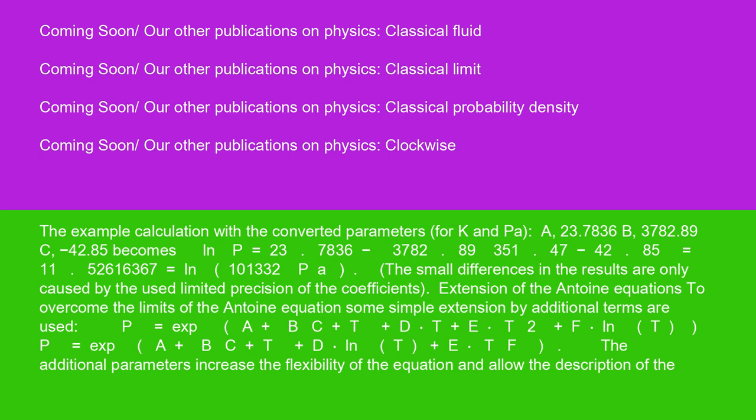Becomes ln P equals 23.7836 minus 3782.89 over 351.47 minus 42.85 equals 11.52616367 equals ln(101332 PA). The small differences in the results are only caused by the used limited precision of the coefficients.